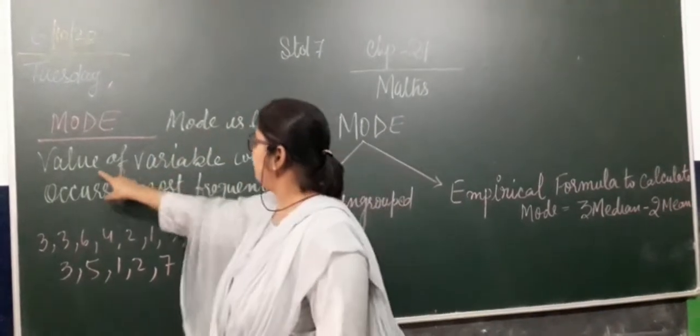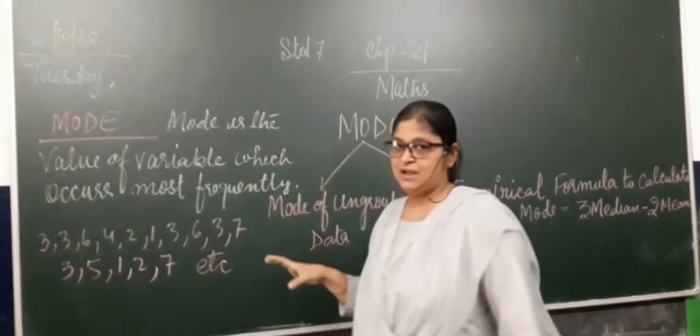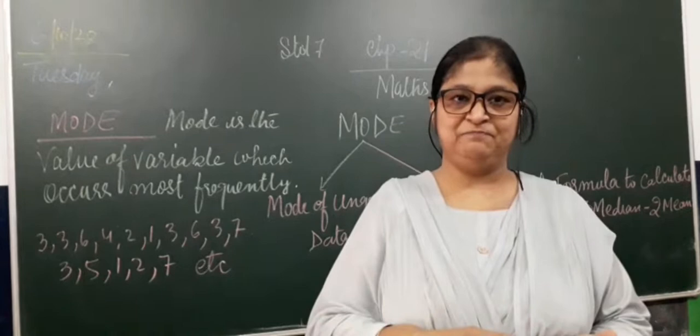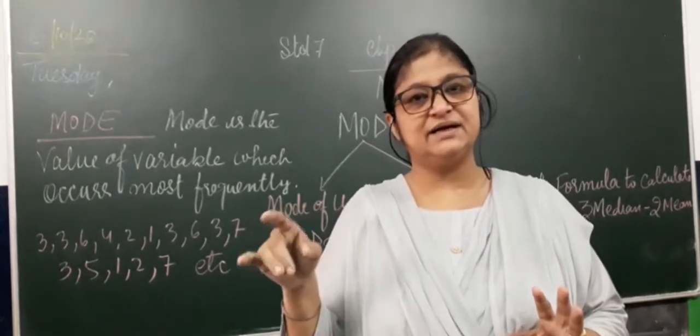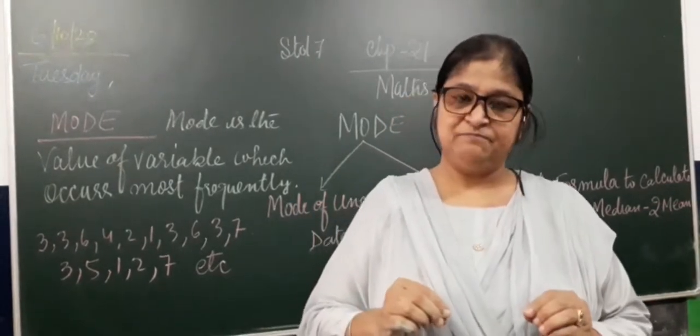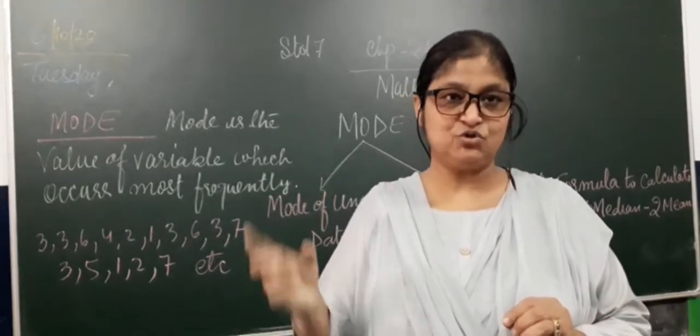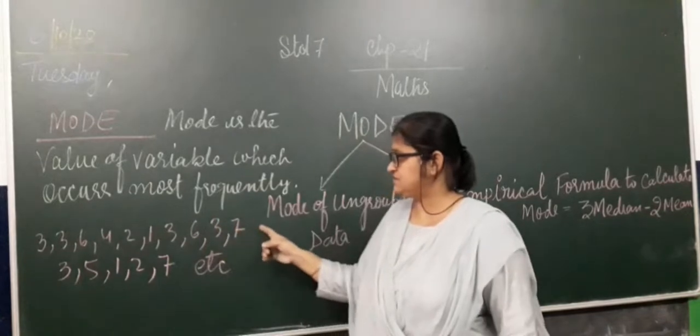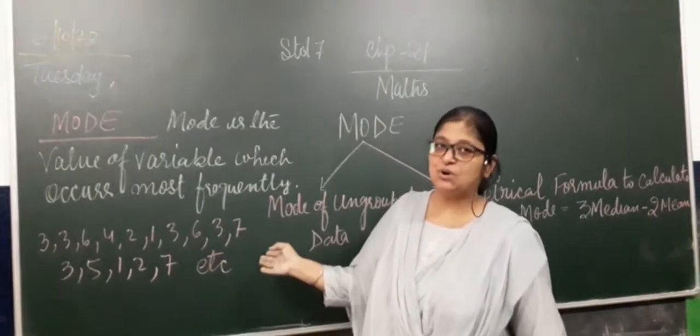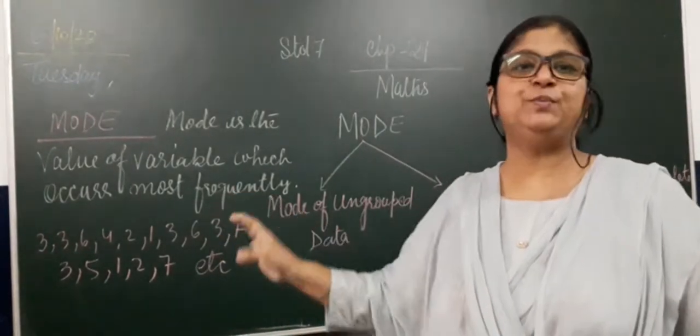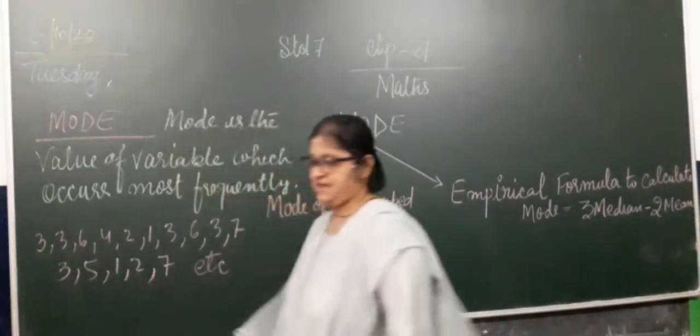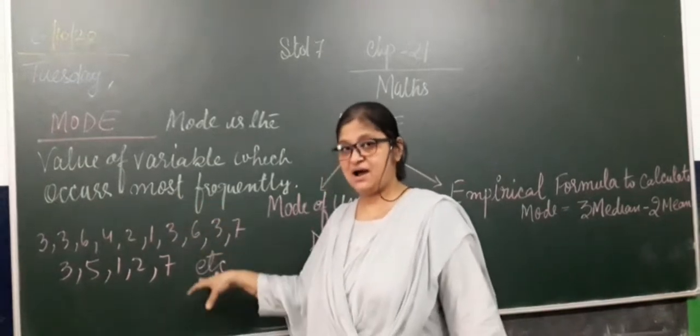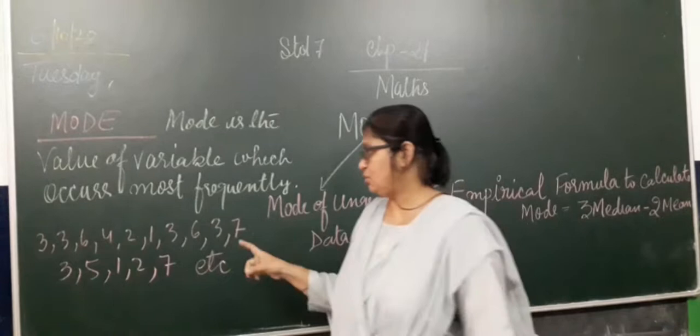Mode is the value of variable which occurs most frequently. You have an observation, you have 30 students or 25 students. We have a frequency of observation and frequency of the data. For example: 1, 3, 6, 6, 7, 3, 5, 1, 2, 7 - it is ungrouped data. What is the mode? The mode is the frequency which is most of the time.